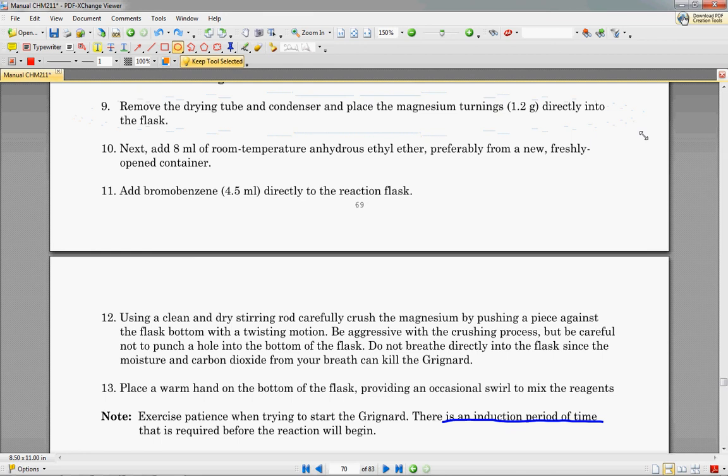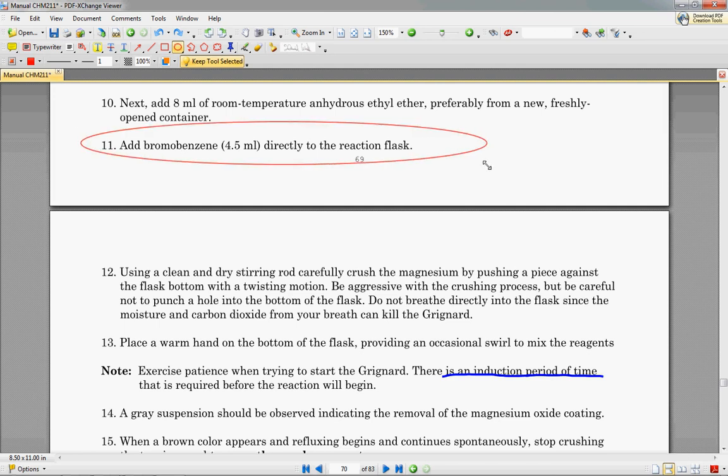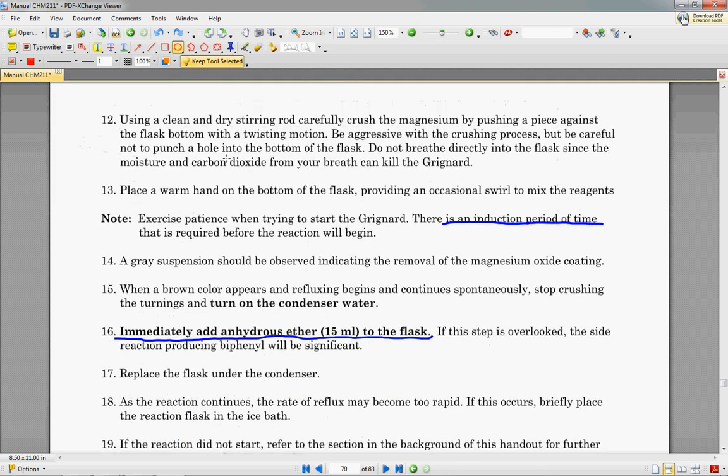Once, remove the drying tube and the condenser and place the magnesium turnings into the flask. Add eight milliliters of room temperature anhydrous ethyl ether, preferably from a new freshly opened container. Once again, just to absolutely ensure that we have as little moisture as possible. And then we're going to add our bromobenzene to the flask.